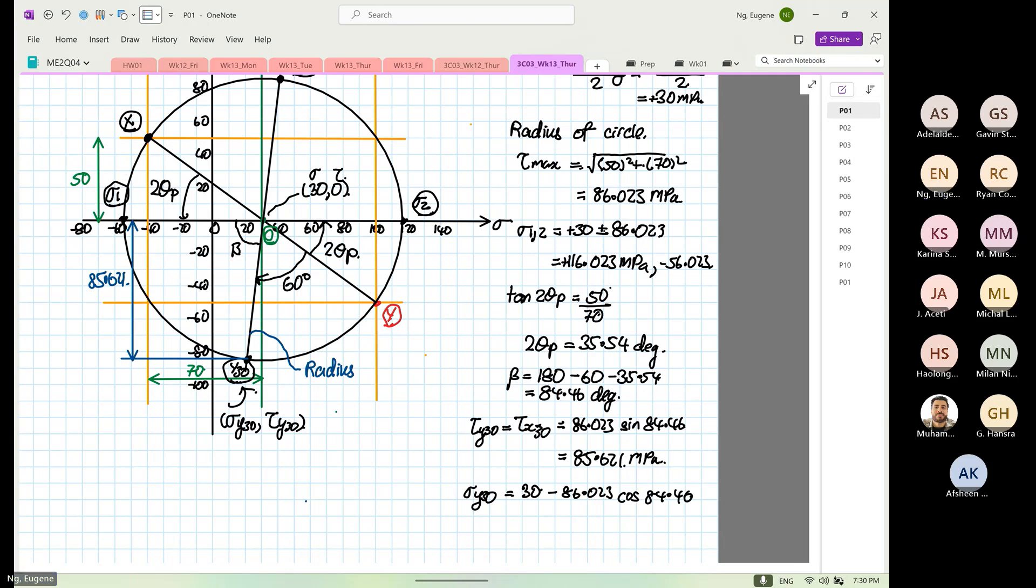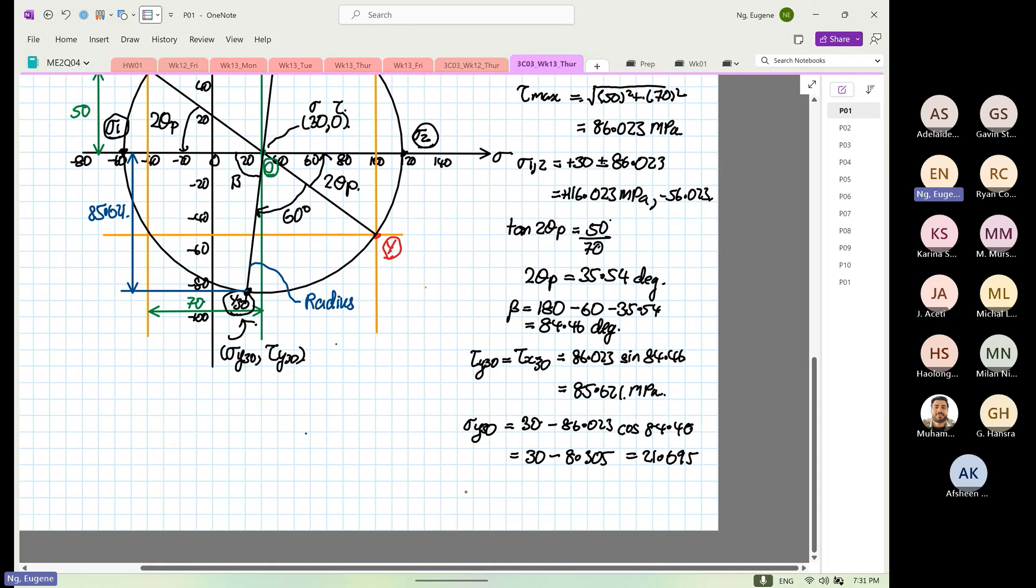This is why I encourage you all to do the shear, but the shear is very difficult to make mistakes. So 30 minus, because this is where the average is going towards the left hand side. So 30 minus 86.023 cos 84.46, this is equal to 8.305.